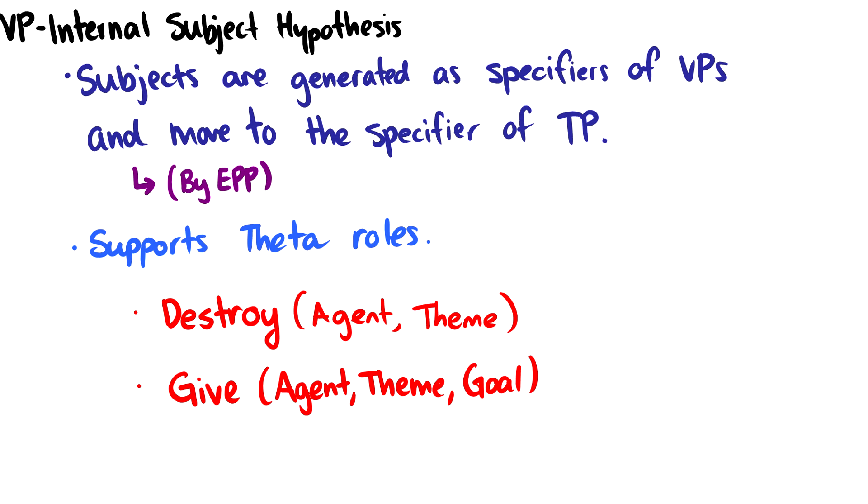Instead we want subjects to be generated as specifiers of VPs, and then they will move to the specifier of TP via the extended projection principle. And why? So the question is, why do we need to do that?